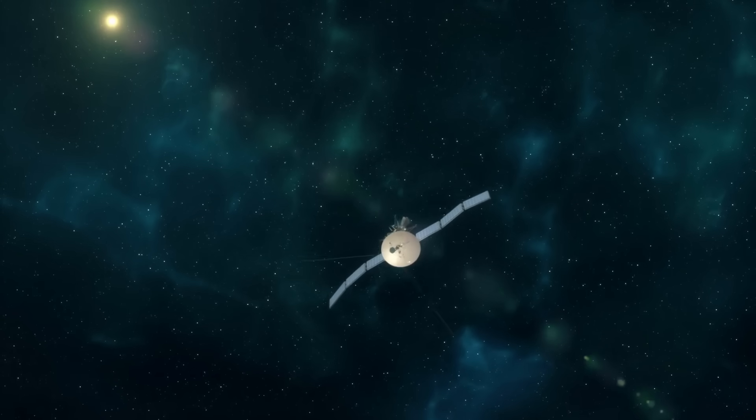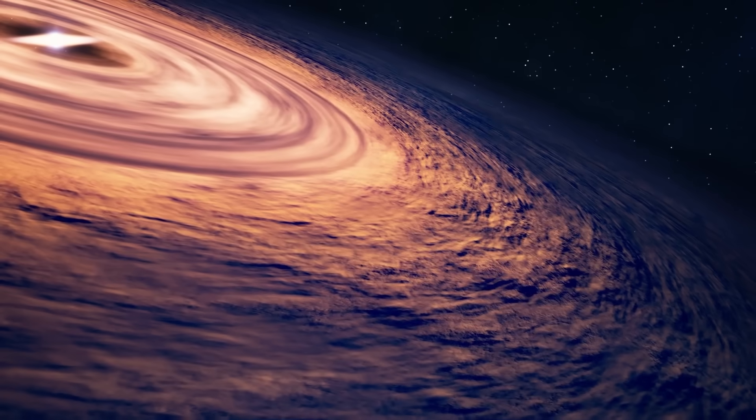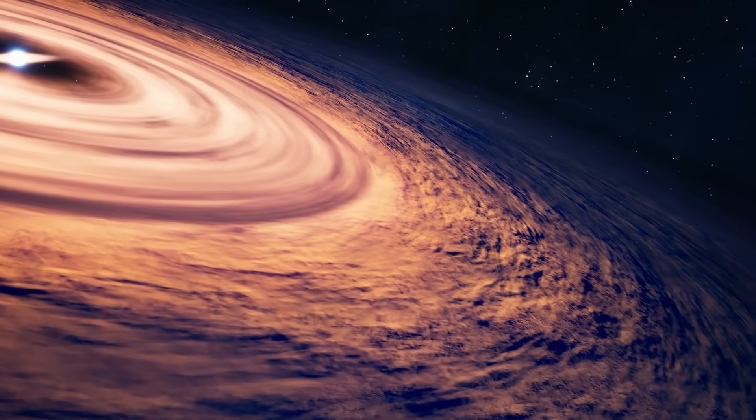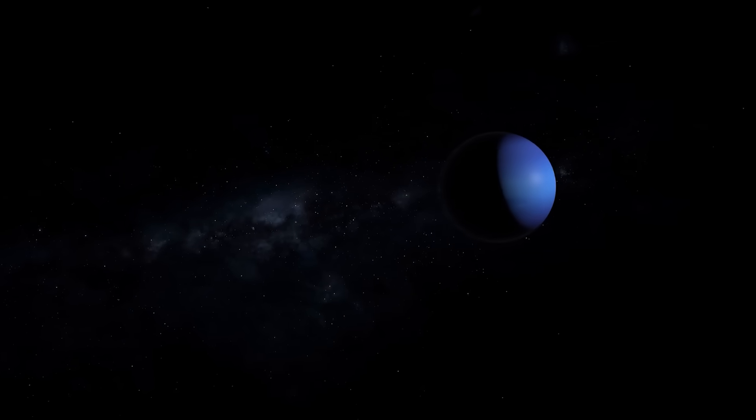The path was designed to allow the probes to gain additional momentum through gravitational maneuvers on each of the past planets. This cut the trip time to Neptune from 30 to only 12 years.